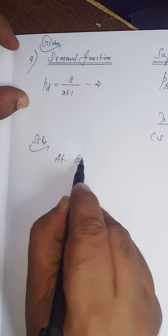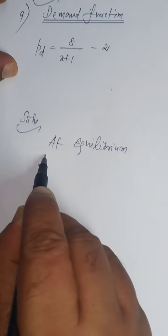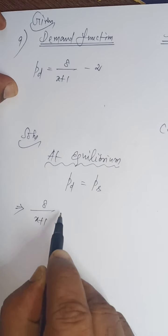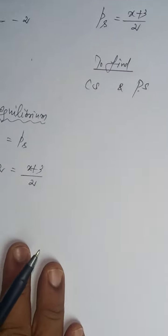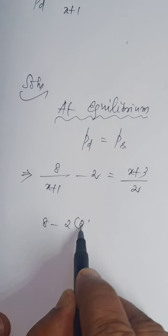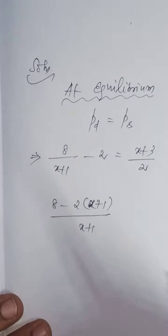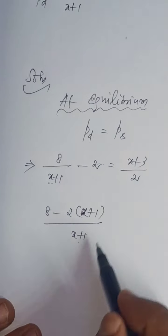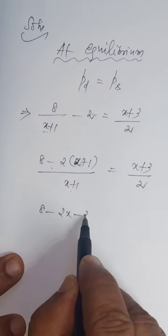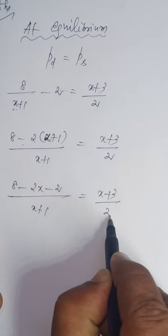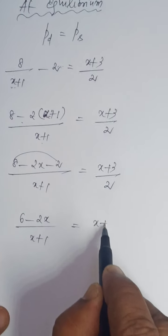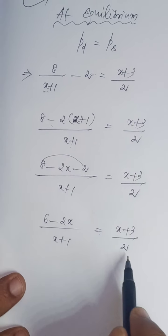Solution: At equilibrium, demand function equals supply function. PD equals 8 divided by (x plus 1) minus 2, and PS equals x plus 3. We have to find out the value of x. So: 8 minus 2 into (x plus 1), divided by (x plus 1) — the LCM is x plus 1. We cross-multiply: 2 into (x plus 1) divided by (x plus 1) equals (x plus 3) divided by 2.